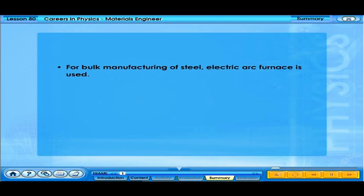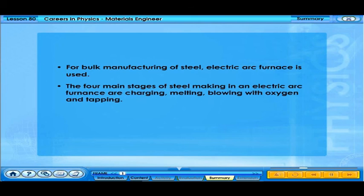For bulk manufacturing of steel, an electric arc furnace is used. The four main stages of steel-making in an electric arc furnace are: Charging, Melting, Blowing with oxygen, and Tapping.